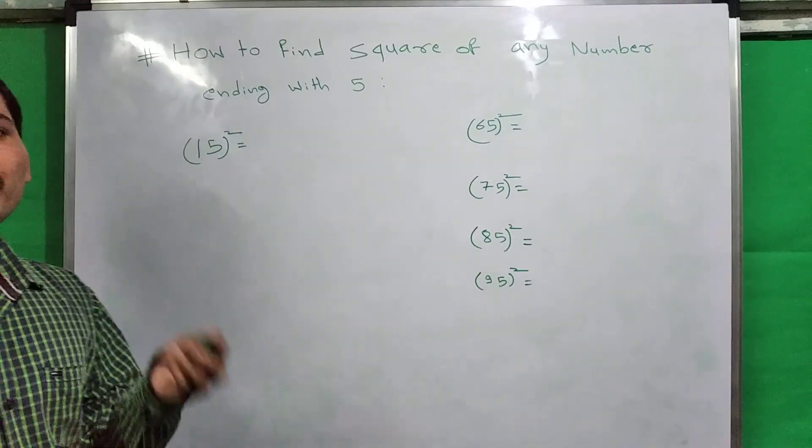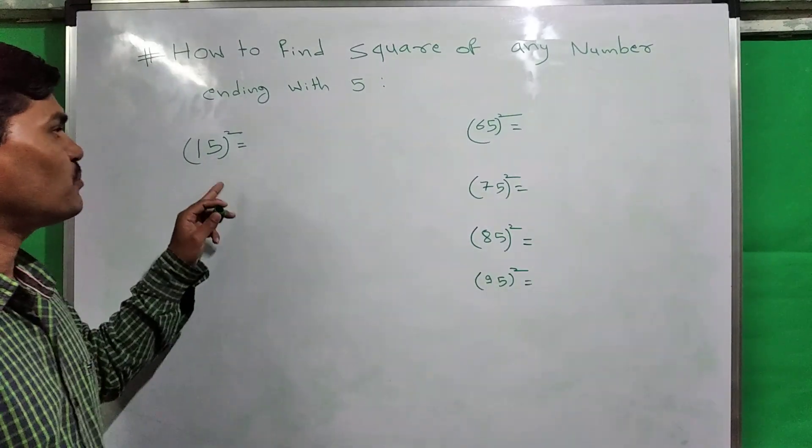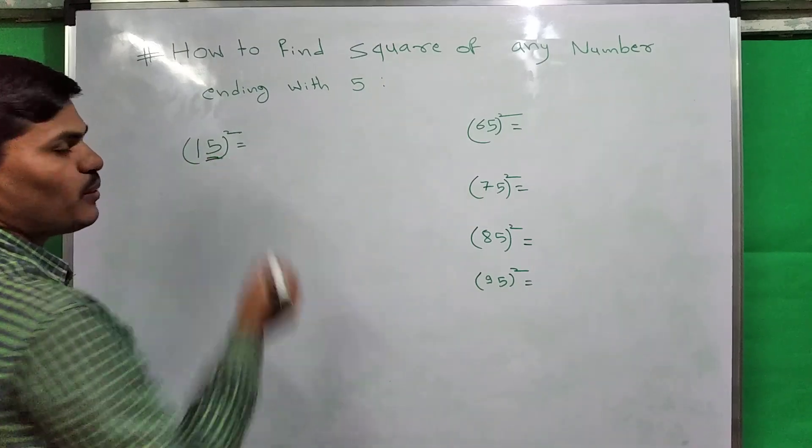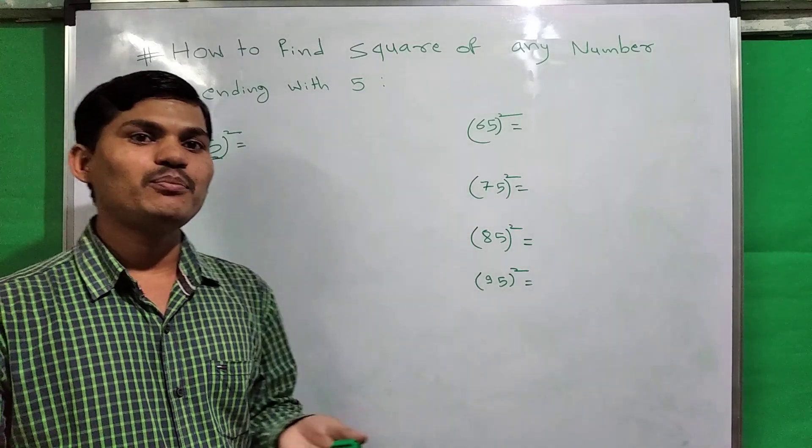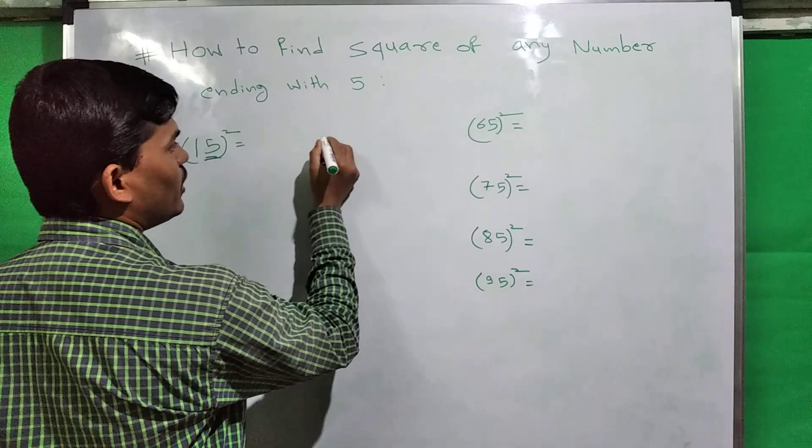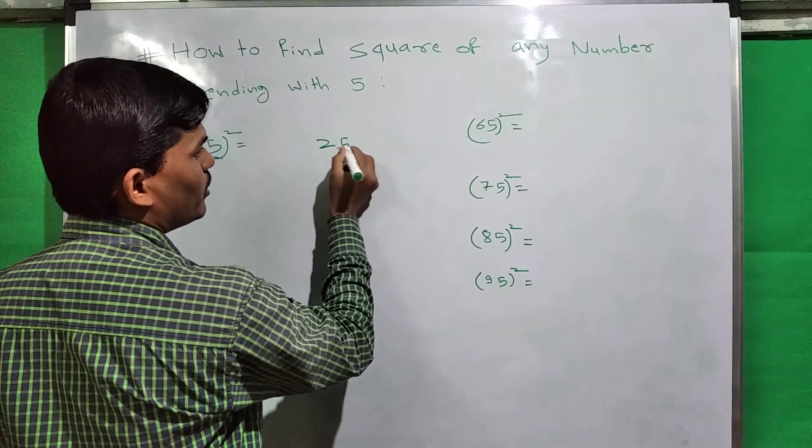Now this is 15 square. We have to find the square of 15. First step is take the square of 5. We already know that the square of 5 is 25. Write down the square of 5 here first: 25.